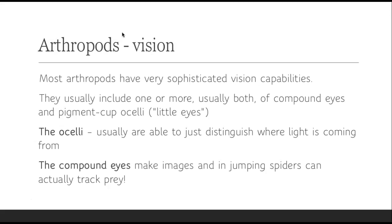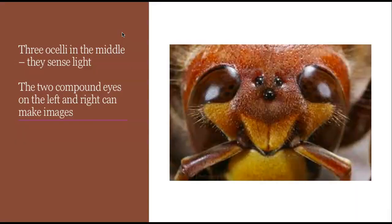In terms of vision, arthropods actually have very sophisticated vision capabilities. They usually include compound eyes, and also these little eyes called ocelli, which are just pigment cups. The ocelli are usually able to just distinguish where light is coming from, so the organism can orient towards light or away. Here are the ocelli — the little eyes, just little pigment cups. And here are the compound eyes that can make images. The jumping spiders can actually track prey with them.